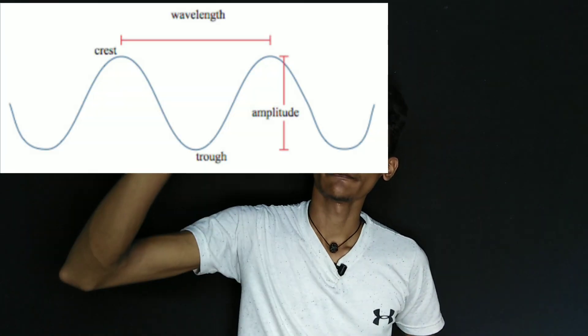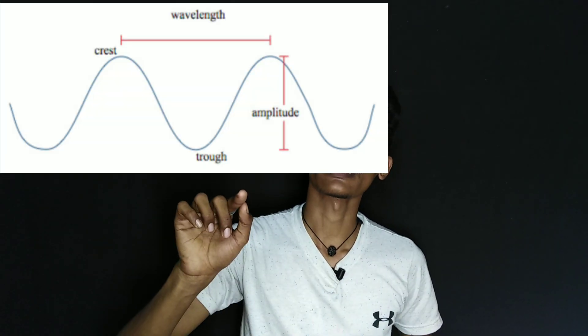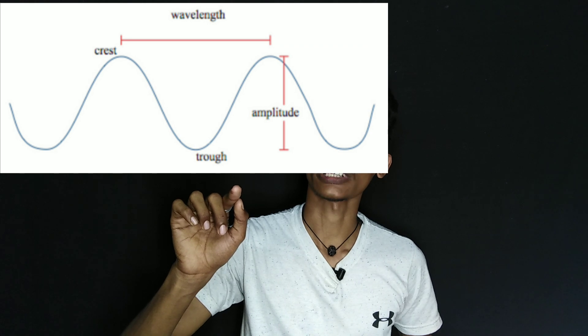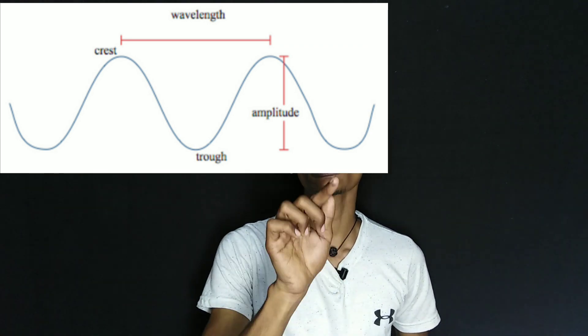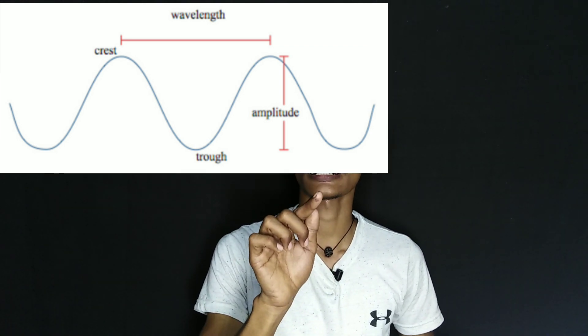In this video, we have a sound wave propagating through a medium. If we draw a wave, it has a crest, a crest, a trough, and crests. If we trace a crest, we have a wave.